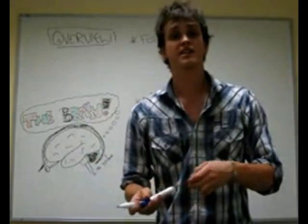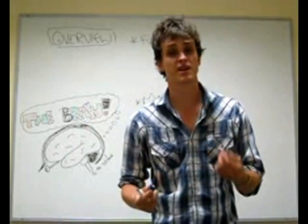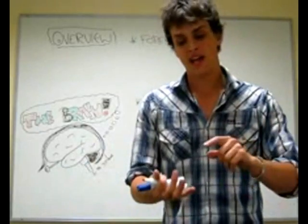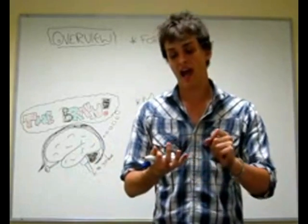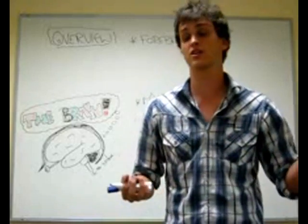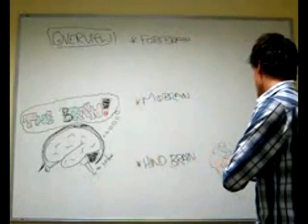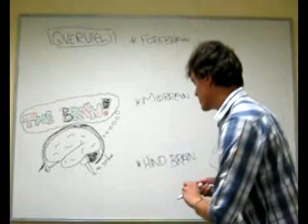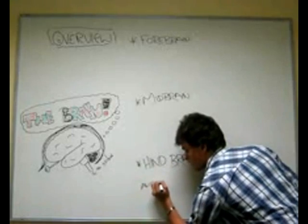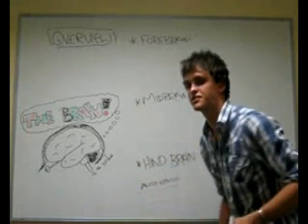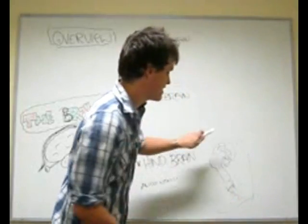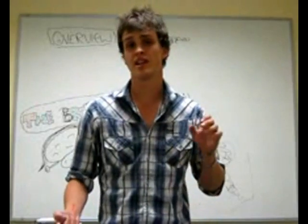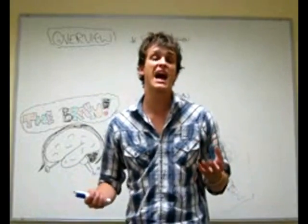The cerebellum, the little brain, consists of approximately the same number of neurons as the rest of the brain — it is just more compact, hence the darker colour. It is responsible for balance, motor coordination, and the smoothing of motions. This entire area controls autonomic functions — everything you don't think about, like breathing, heart rate, and digestion.